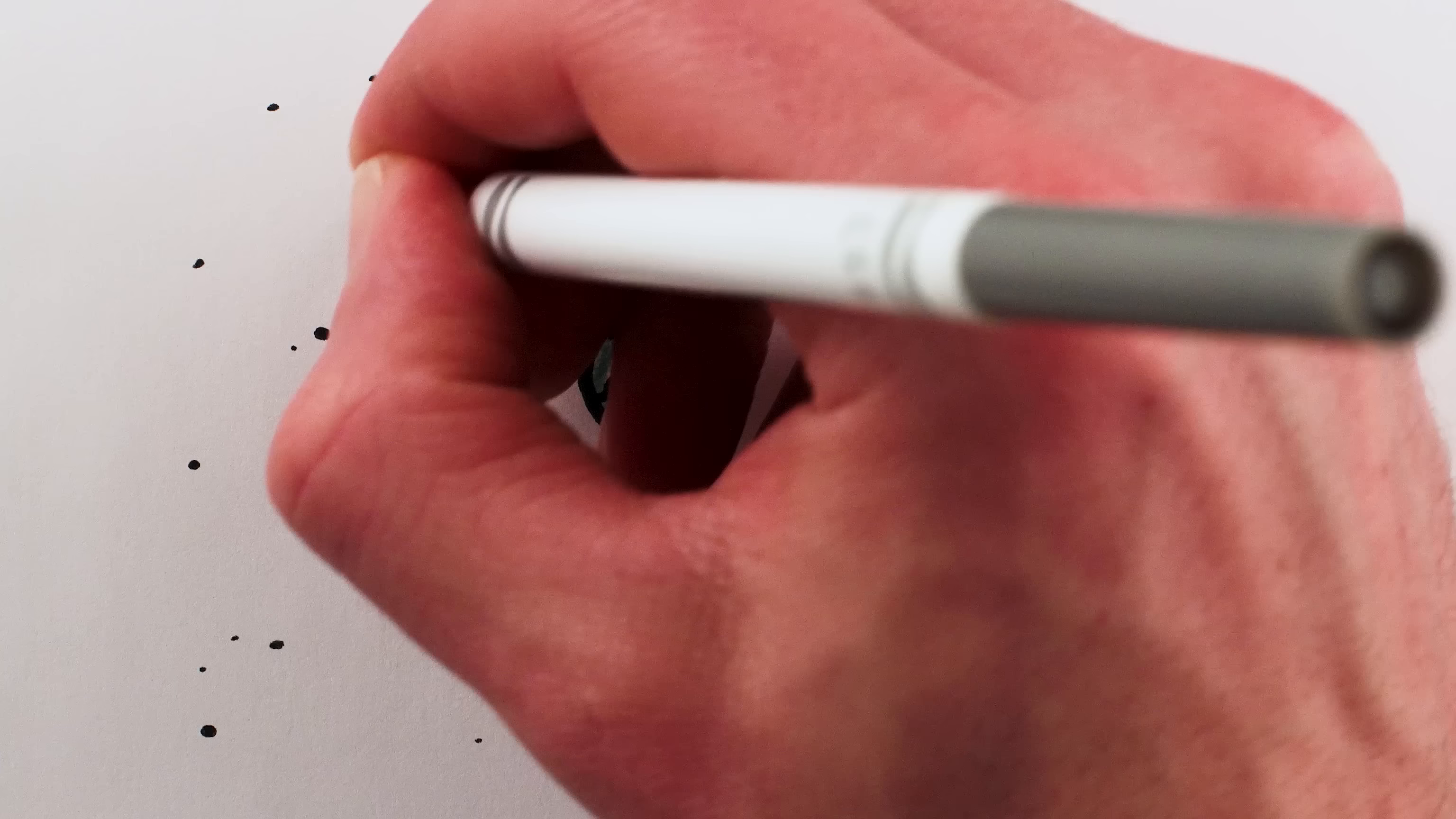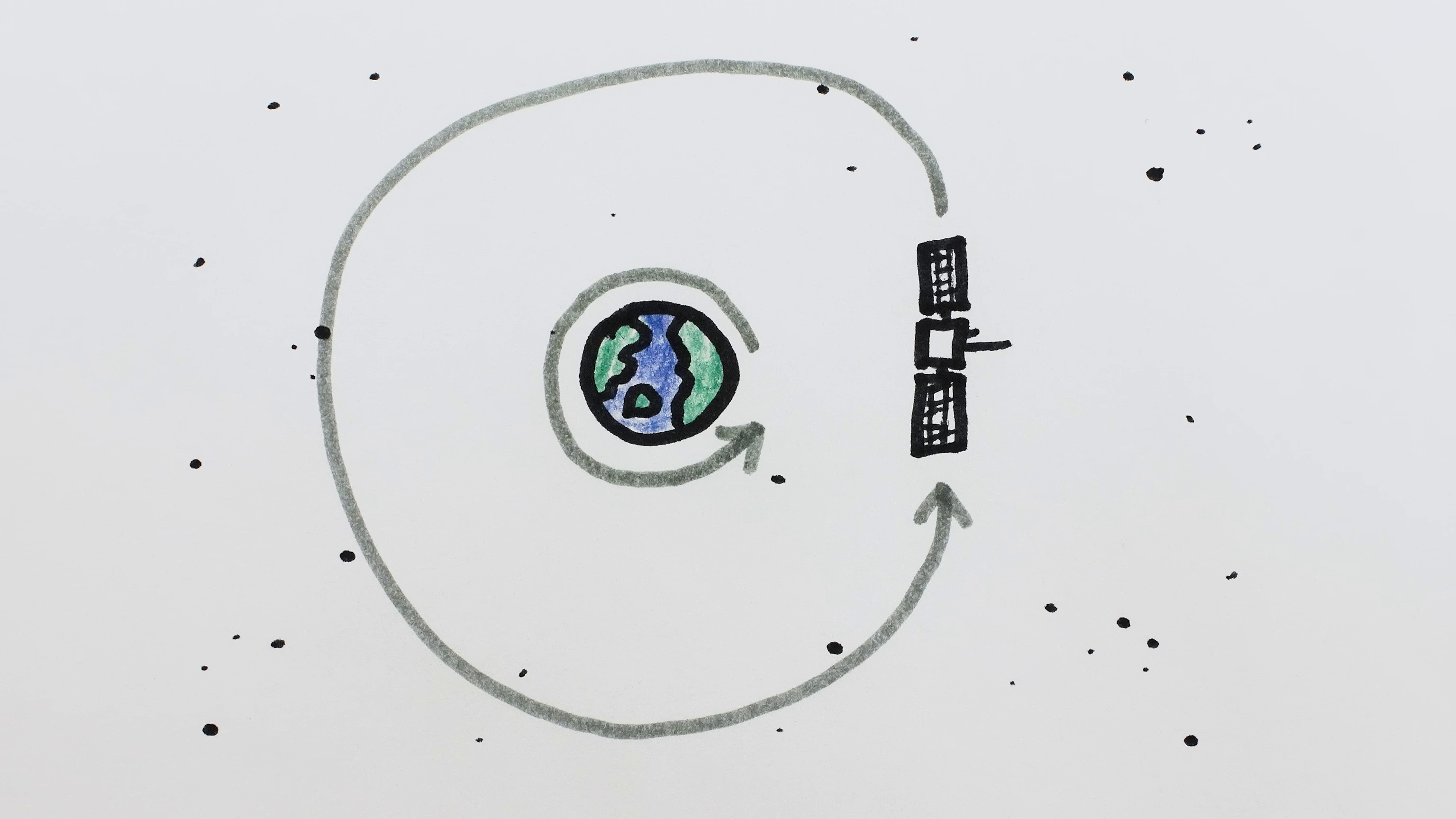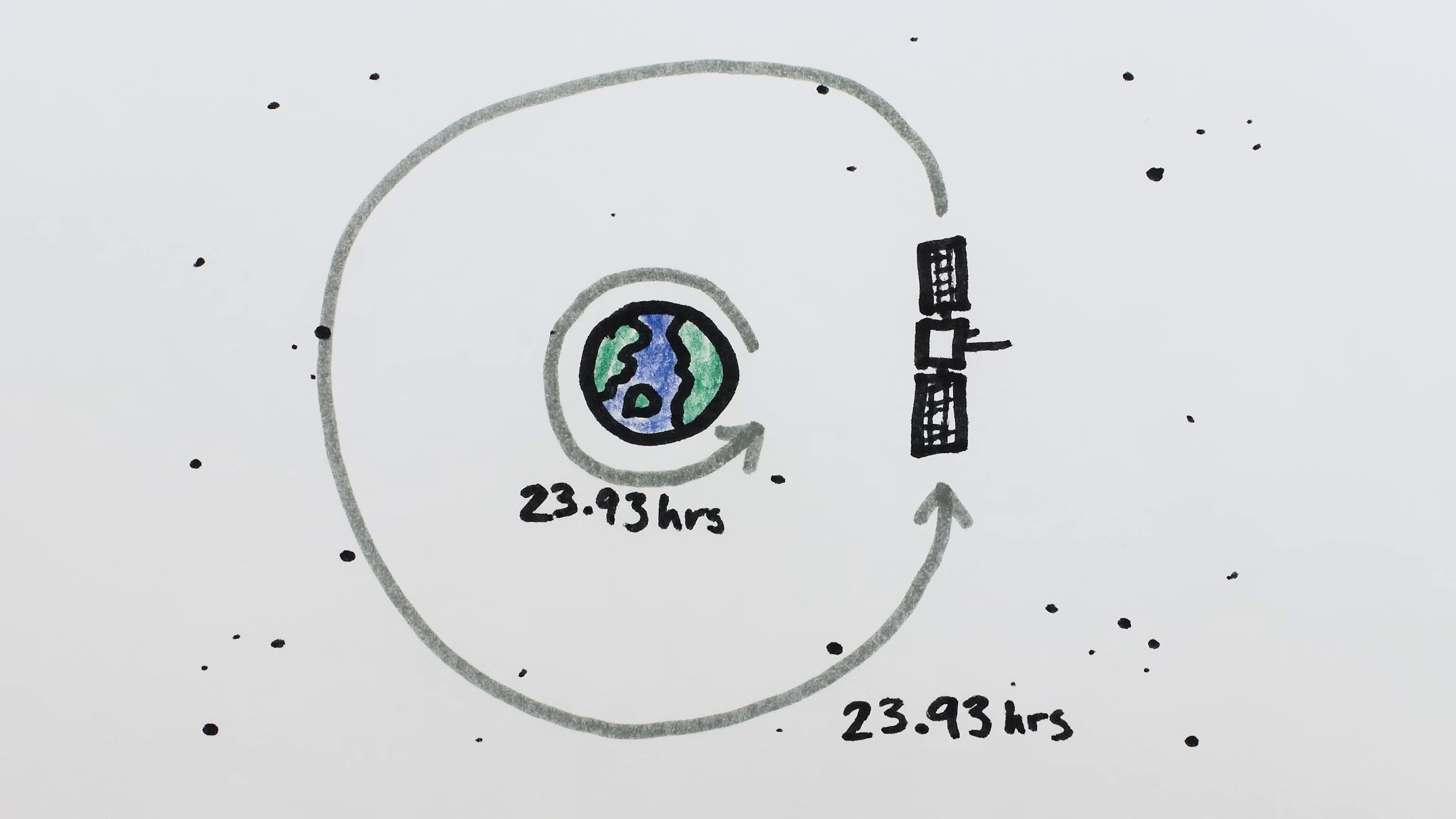Because, by definition, a geosynchronous orbit is in sync with the rotation of the Earth. It takes the same amount of time for one orbit as the Earth takes for one full rotation. So even though it's orbiting like normal around the Earth's center of mass, it's stationary with respect to Earth's surface.